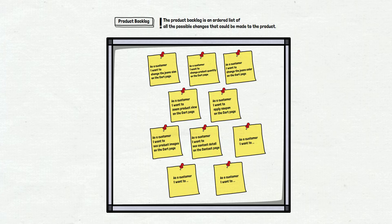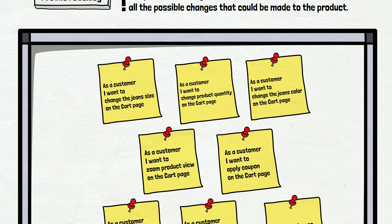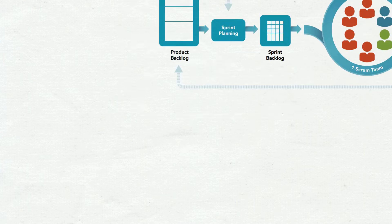Cards describe the requirements from the user's perspective. For example: 'As a customer, I want to change the size of the jeans on the cart page.' Or: 'As a customer, I want to change the product quantity on the cart page.' And a lot more cards like this. Basically, these are all functionalities, improvements, and bugs planned to be developed and delivered. It should be prioritized, so the most important stories are on the top. That's enough about the product backlog.